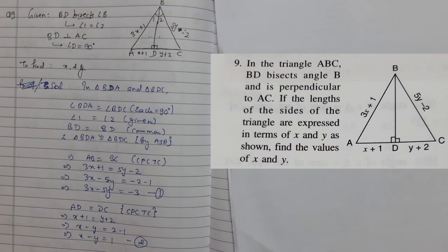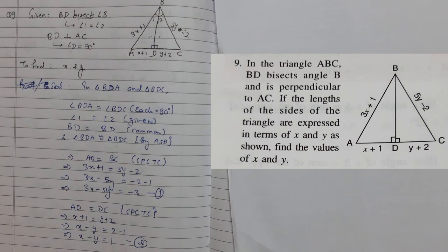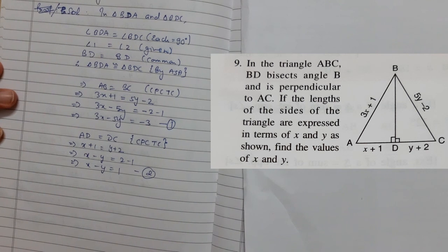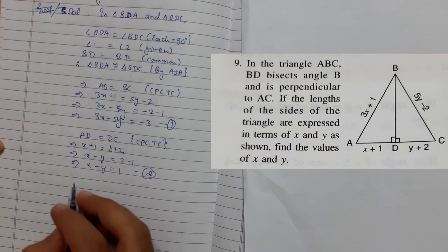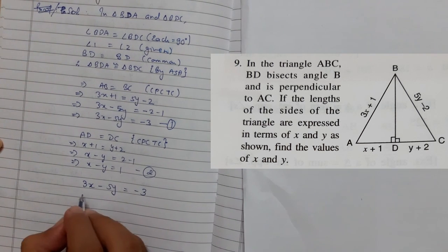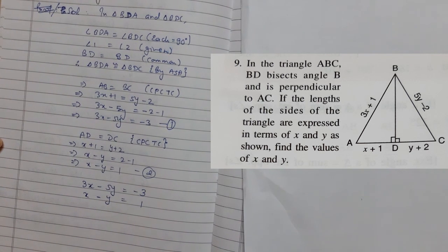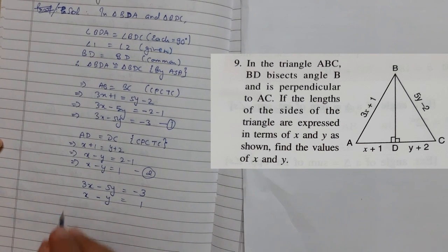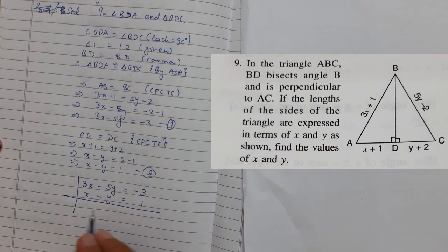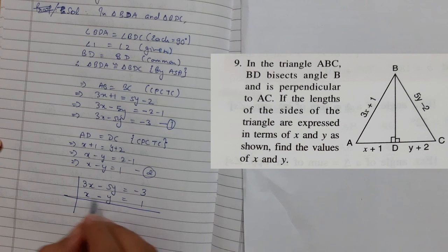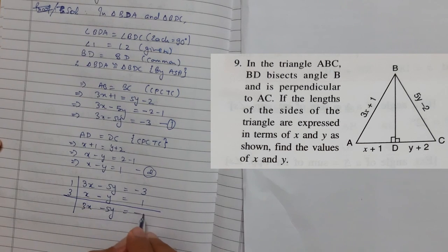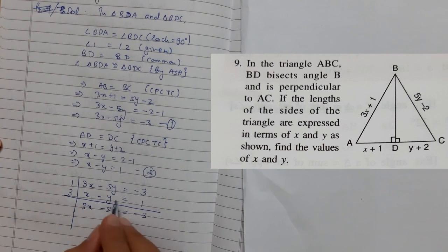If you know simultaneous linear equations, you can solve it very easily. I will just quickly show you how to do it by elimination method. So just write both equations. Now we need to make one variable same, either x or y. So I am multiplying this equation by 3 and this by 1. So I get 3x minus 5y equals minus 3, and this equation by 3.